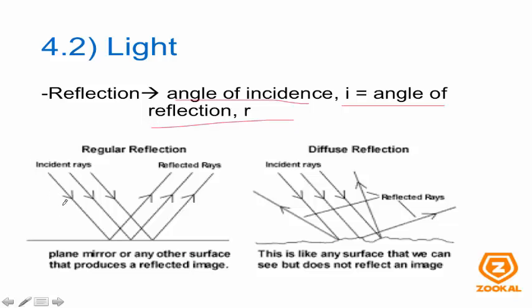For normal reflections on a smooth surface, I is equal to R. But for diffuse reflection, the incident rays hit the surface, but because the surface is rough, the angle of incidence for all the rays onto the rough surface are all at different angles. So when they are reflected, they reflect into different directions, because I has to be equal to R.